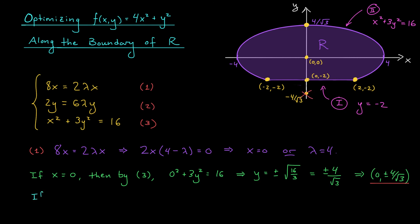If instead lambda is equal to 4, perhaps we can get some information using equation 2, the only other equation involving lambda. We find that 2y equals 6 times 4y, so 2y is 24y. From here, it's not too hard to see that y must be 0. Again, we can turn to equation 3 to get the corresponding value for, in this case, x. We find that x squared plus 3 times 0 squared is 16, and hence x is plus or minus 4. This means that (±4, 0) are also candidates for our extrema along the ellipse. Note that both of these points are indeed on our boundary curve, and so must be considered.